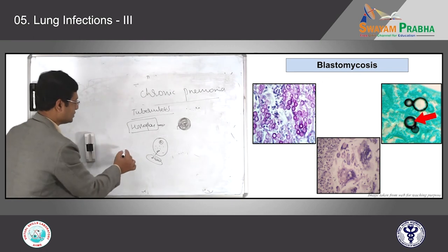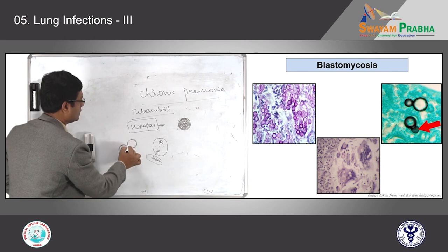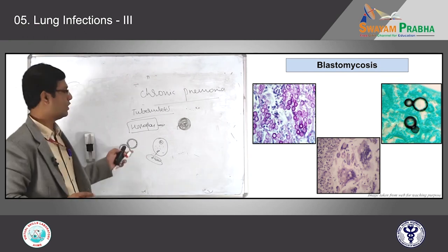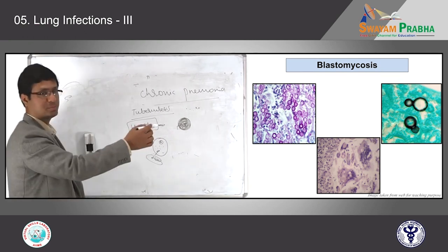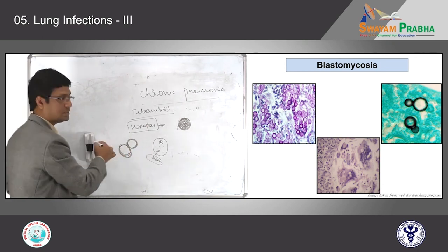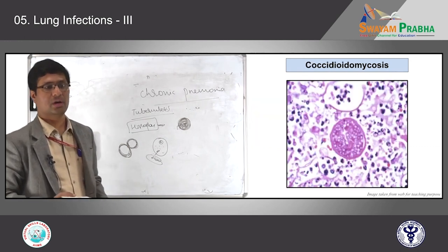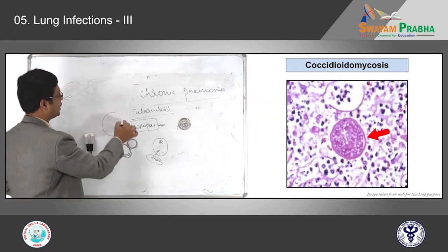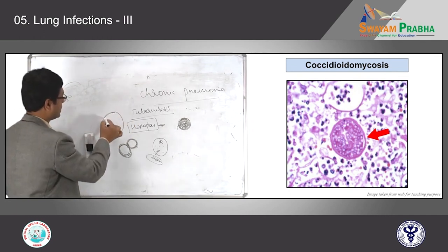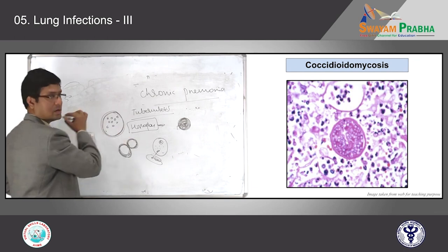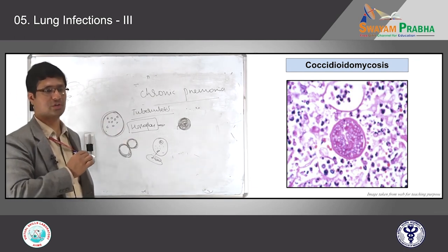For Blastomycosis, you will see a thick-walled fungus with a budding form — a small daughter cell. For Coccidioidomycosis, there is a big spherule-like organism with a double thick wall, and you will see small micro-spherules inside the big organism. This is how it looks under microscopy for Coccidioidomycosis. This completes the lung infection lecture.